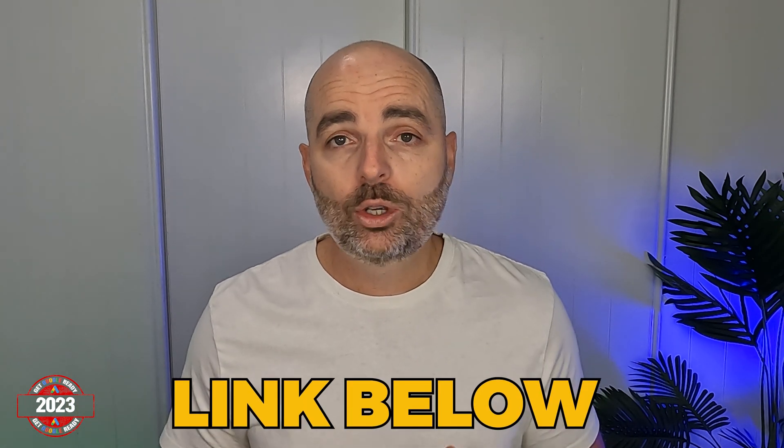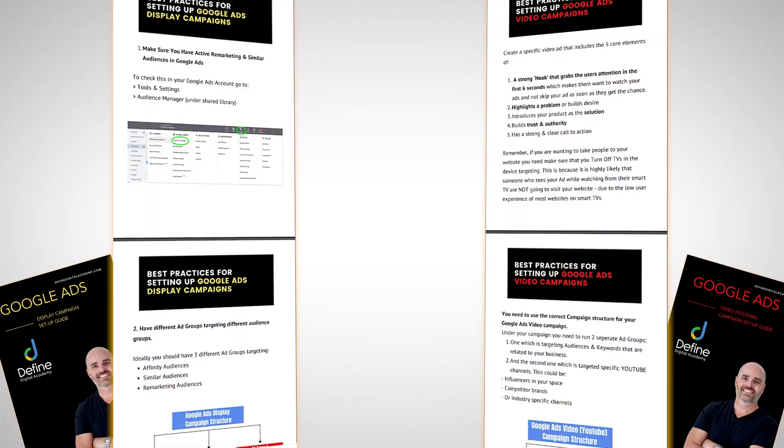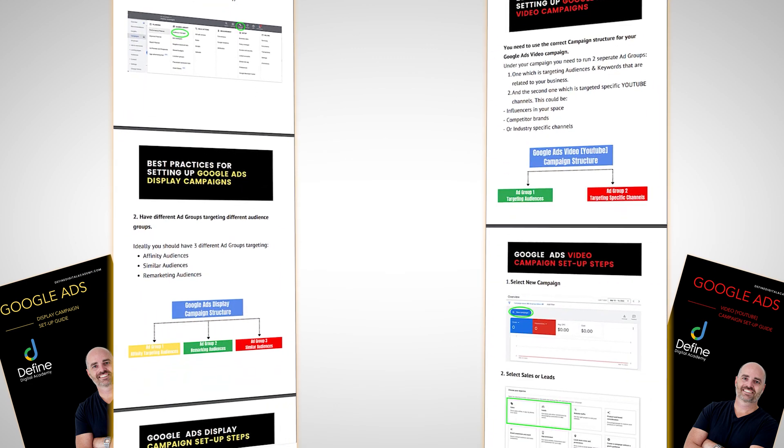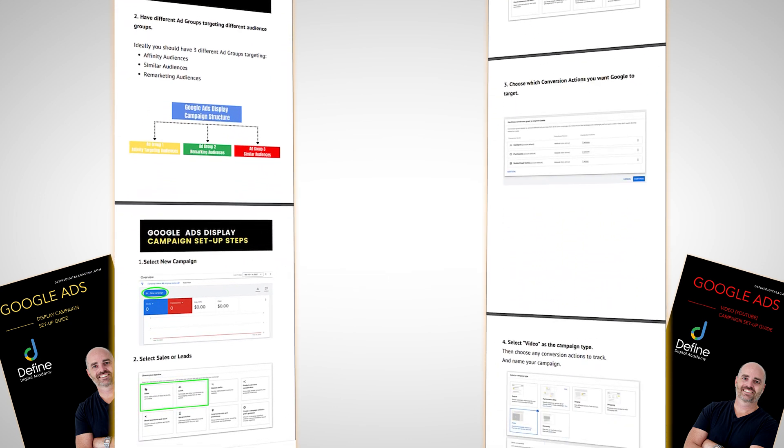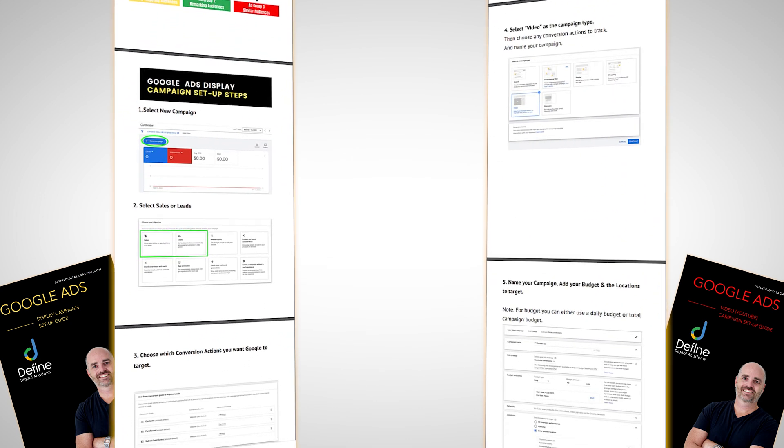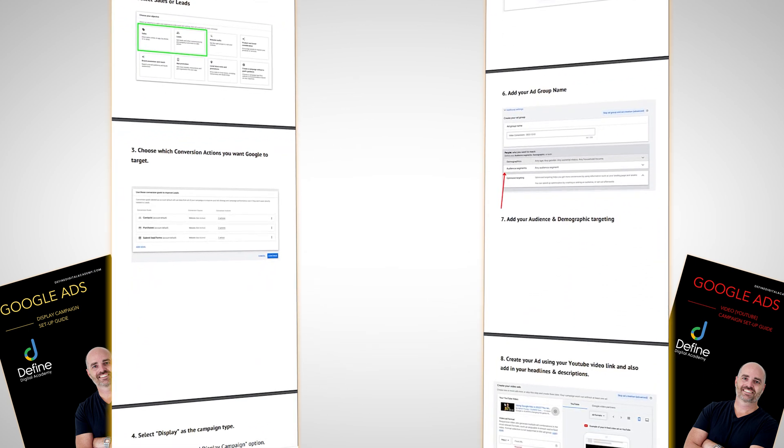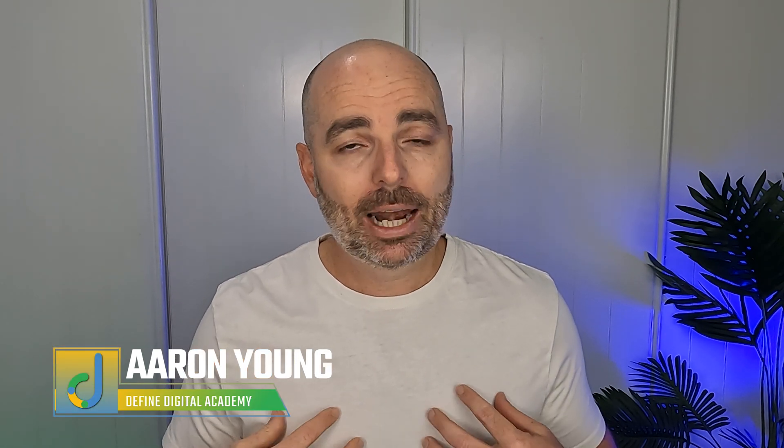I do want to stress that in order to get the best out of those optimization actions, you need to first make sure that you've actually set up your display and video campaigns in the right way. If you follow the link in the description below, you can download a copy of my video campaign setup guide and also my display campaign setup guide. Those guides will take you through the exact process of setting up your campaigns using the same structures I use for small and large accounts that are seeing great success right now. And if you want to watch the corresponding videos, go through and watch this playlist right here. Thank you for joining me — my name's Aaron Young, I'm your 15,000 hour Google Ads master, and I look forward to seeing you soon.